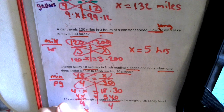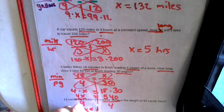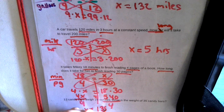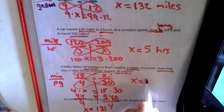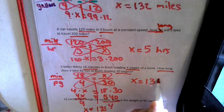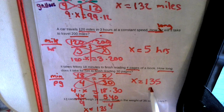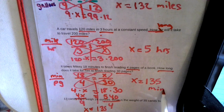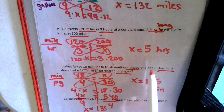And we get X equals 135. X equaling 135 is minutes, because we're looking for how long.